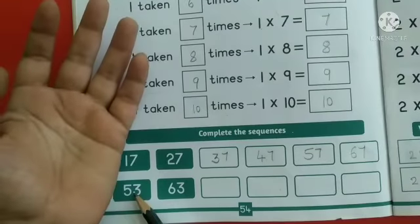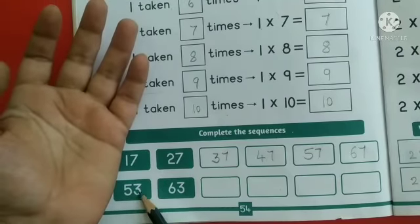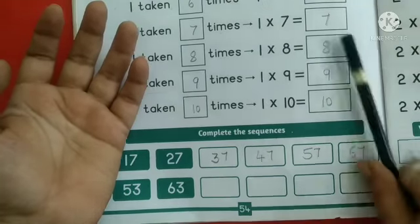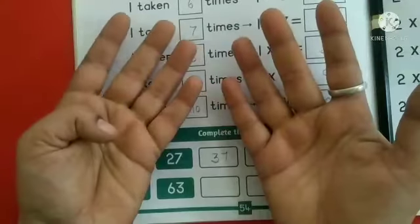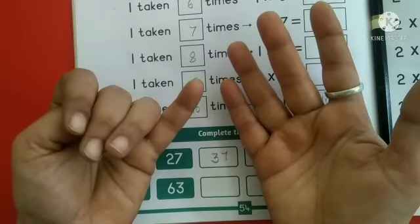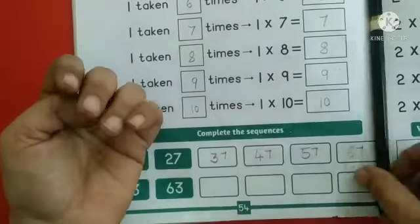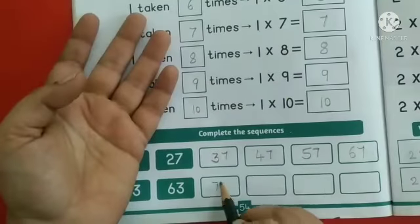Move to next row. Here 53. After 53, they have given number 63. Here also skip 10s. After 63, 64, 65, 66, 67, 68, 69, 70, 71, 72, 73. Write number 73.